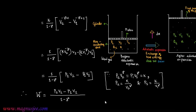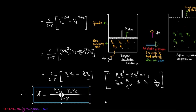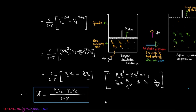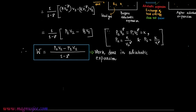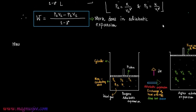Finally, we get the expression of work done by the ideal gas in adiabatic expansion as W = (P2V2 − P1V1) / (1−γ).